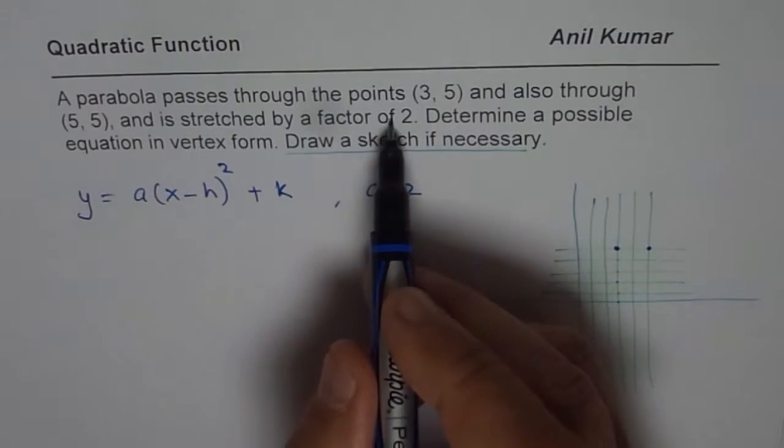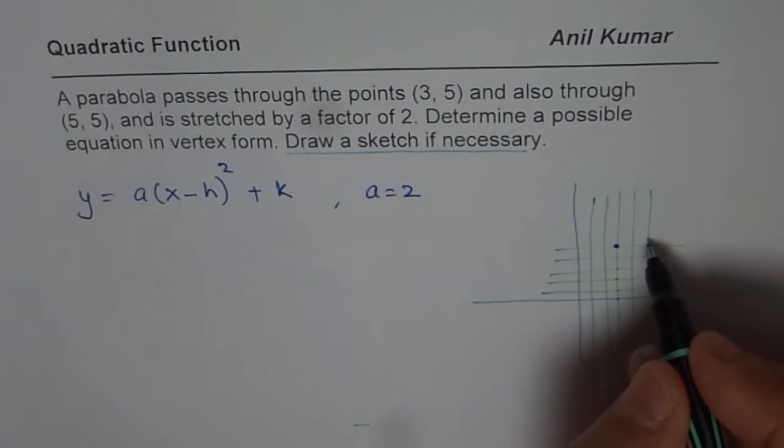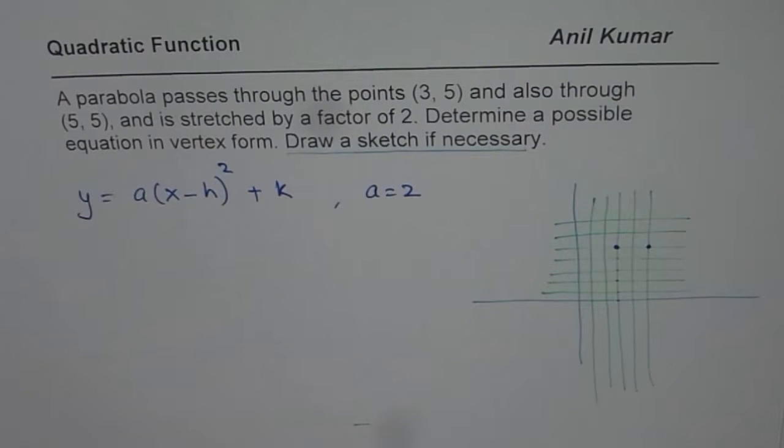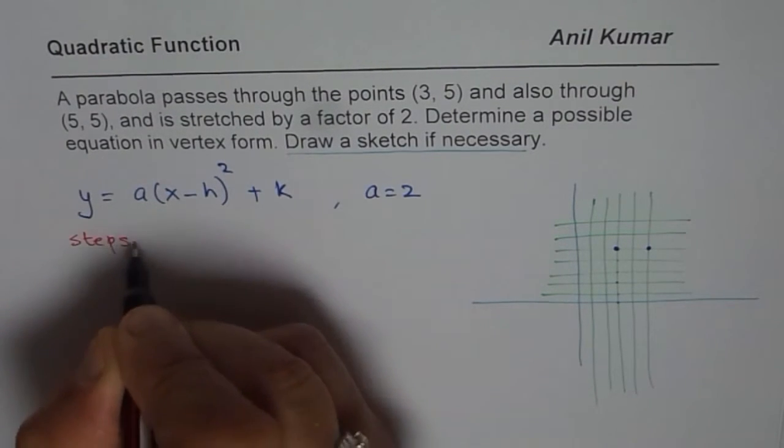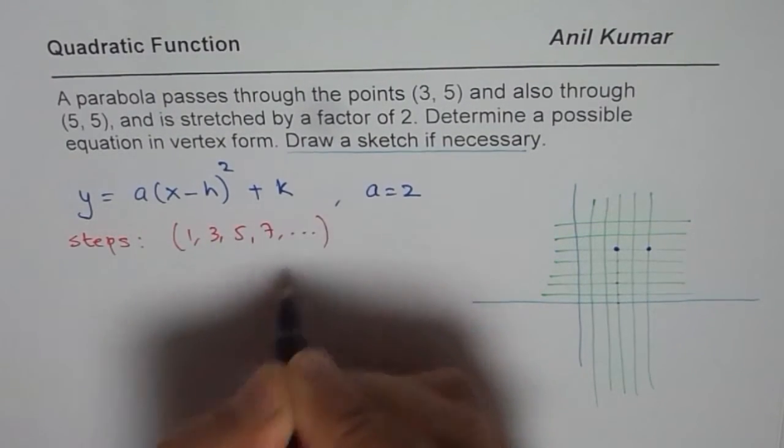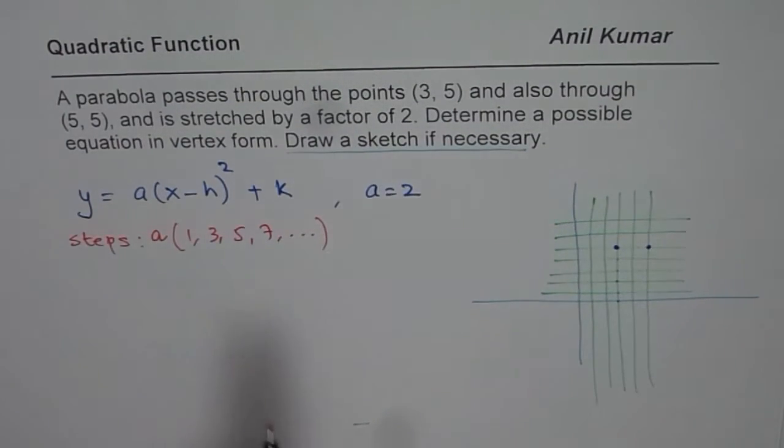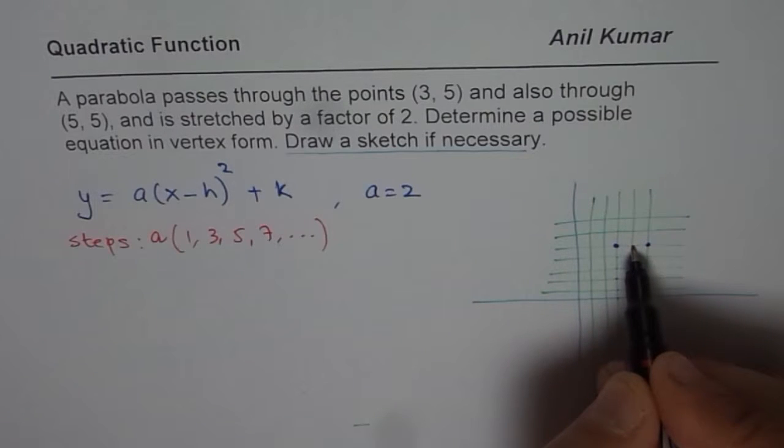And then we are given a stretch factor of 2. So, how does that help you to draw the parabola? Stretch factor. So, let me draw two more lines just to give you a hint. So, when we say stretch factor, normally, we have steps like what? The steps for a parabola are 1, 3, 5, 7 like this, times a. Do you see that? Now, since 2 is my stretch factor, next point.